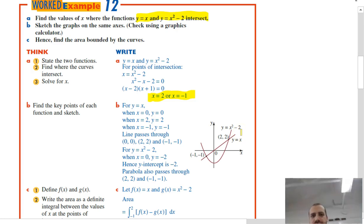Now, let's look at that. We have a line, y equals x, and we have this quadratic, y equals x squared minus 2, and they meet here and here, when x equals negative 1 and when x equals 2.